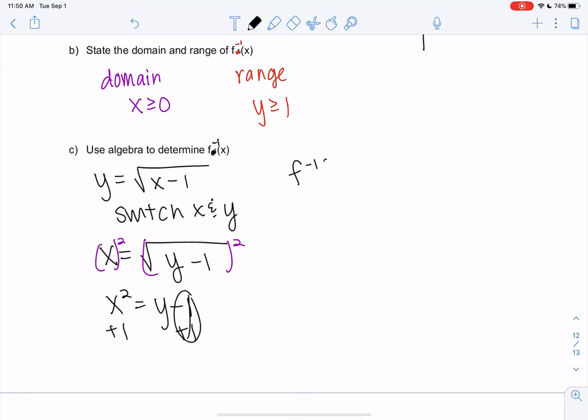So my inverse function is x squared plus one. But we have to use this domain, where x is bigger or equal to one. And I'll show you why with the graph.